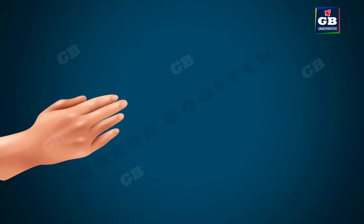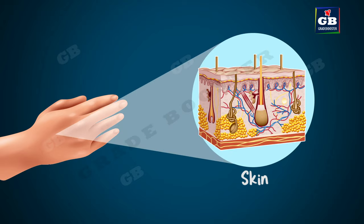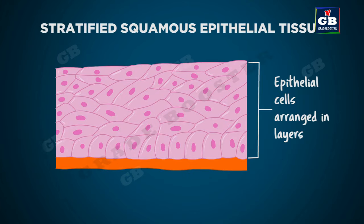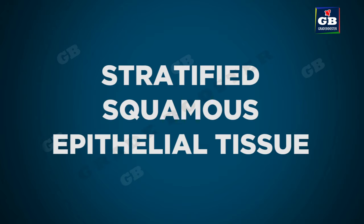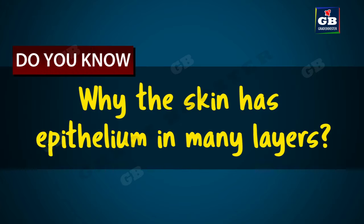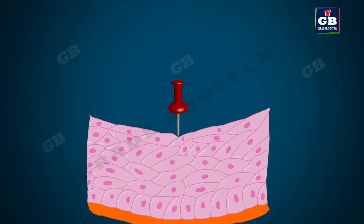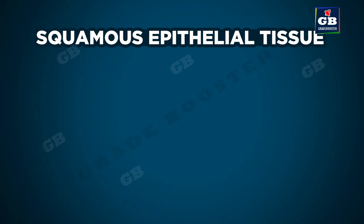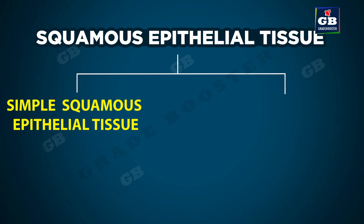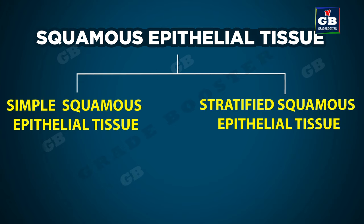Our skin is also a squamous epithelial tissue, but it is not the simple type — it is stratified. Stratified means layered. Our skin is made up of squamous epithelial tissue arranged in many layers. Hence it is called stratified squamous epithelial tissue. The skin has epithelium in many layers because the epithelial cells are arranged in layers to prevent wear and tear. So the squamous epithelial tissue is of two types: simple squamous epithelial tissue and stratified squamous epithelial tissue.